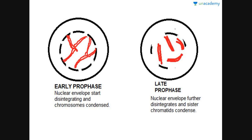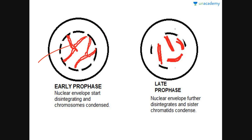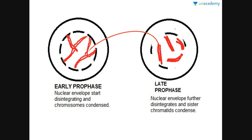In early prophase, the nuclear envelope has started disintegrating but has not yet fully disappeared. The sister chromatids, attached with the help of a centromere at their center, become untangled and condensed so that they can be seen as long, thin, slender filaments. During late prophase, the nuclear envelope has almost completely disintegrated with very few fragments left over.